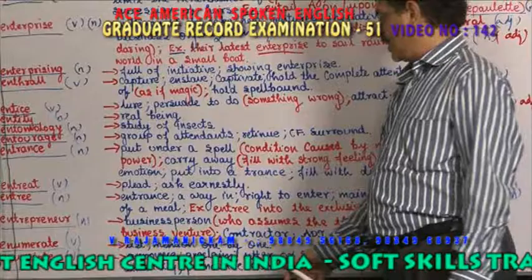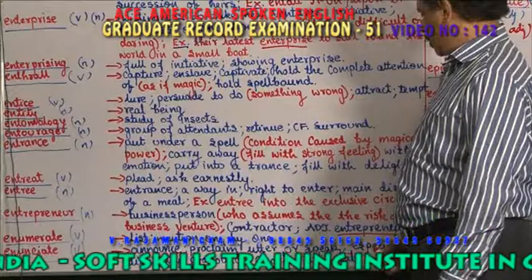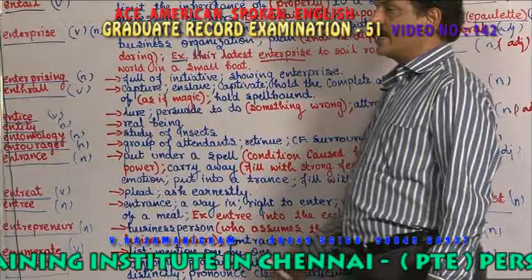Enunciate is a verb. Enunciate means to announce, to proclaim, to utter or speak about. Enunciate especially means to pronounce clearly, articulate, speak clearly — pronounce distinctly.